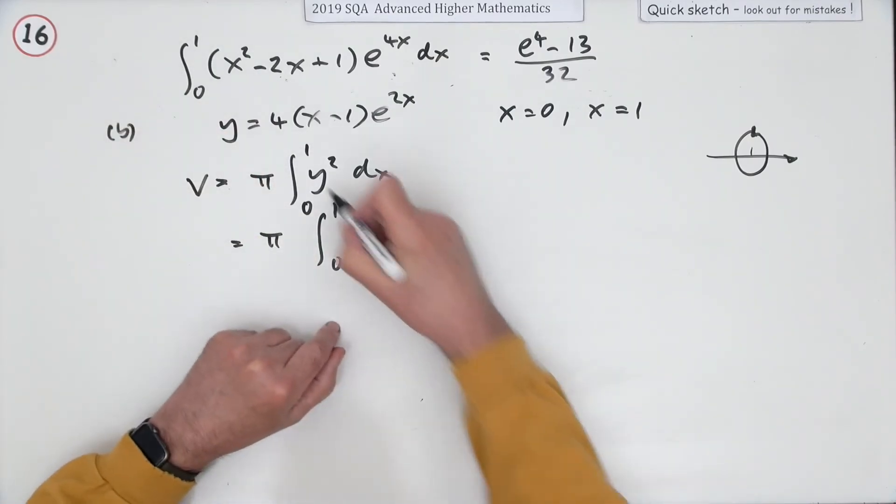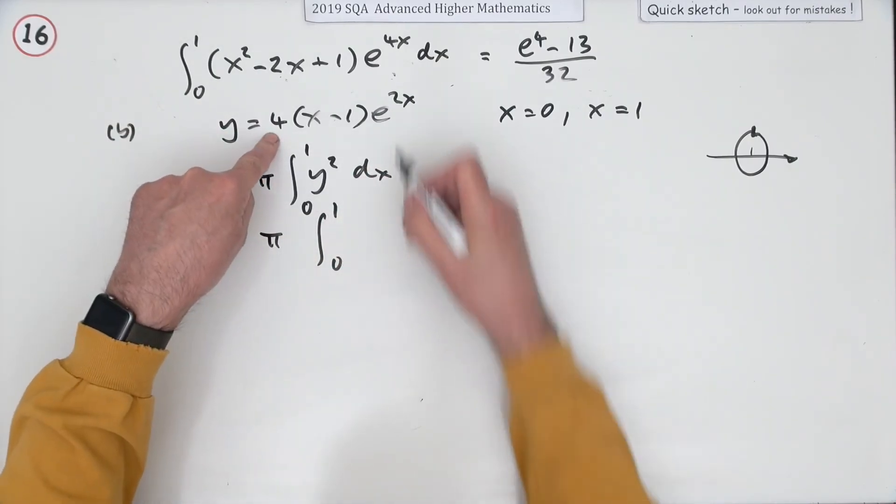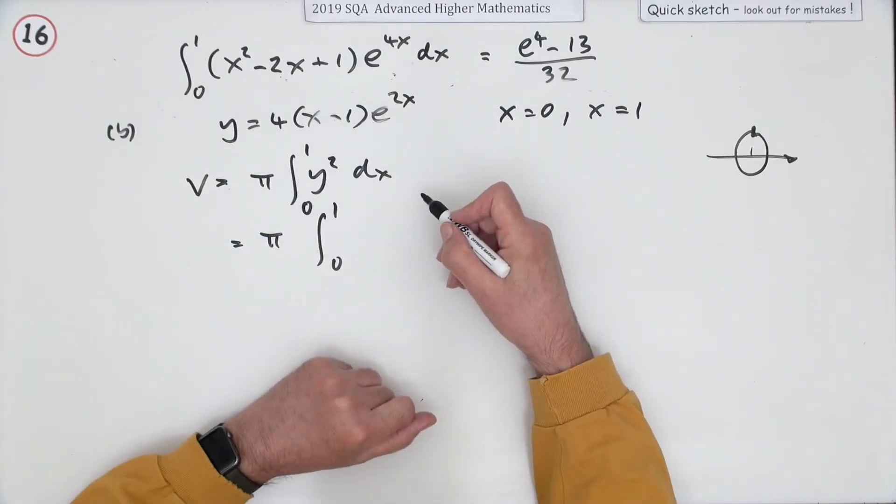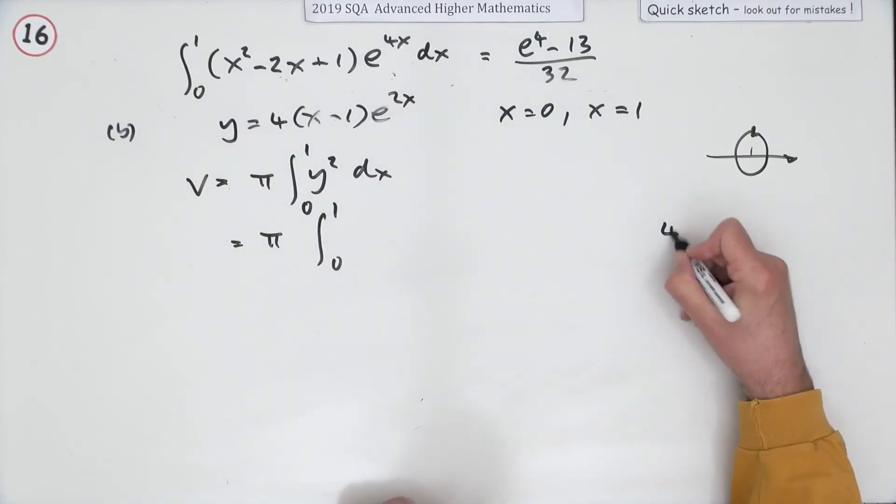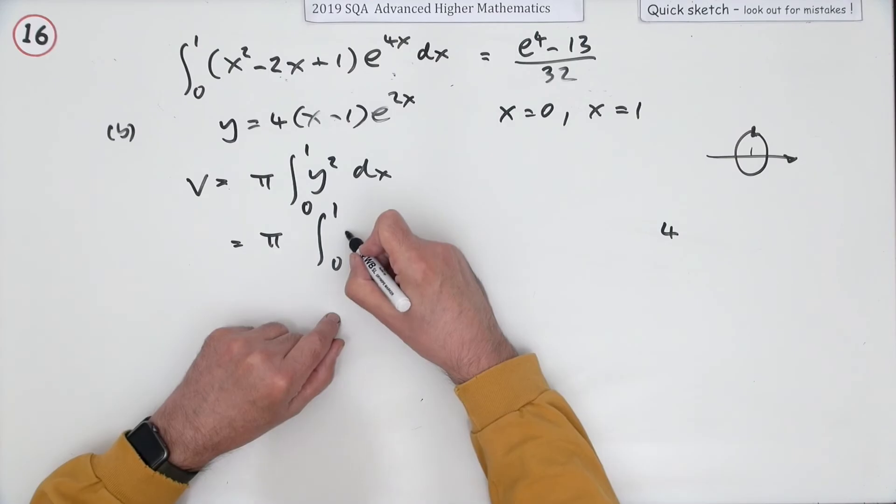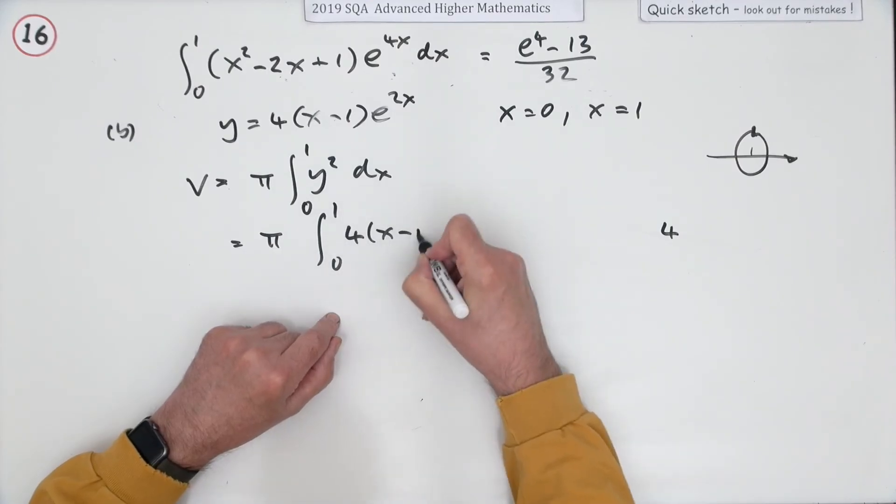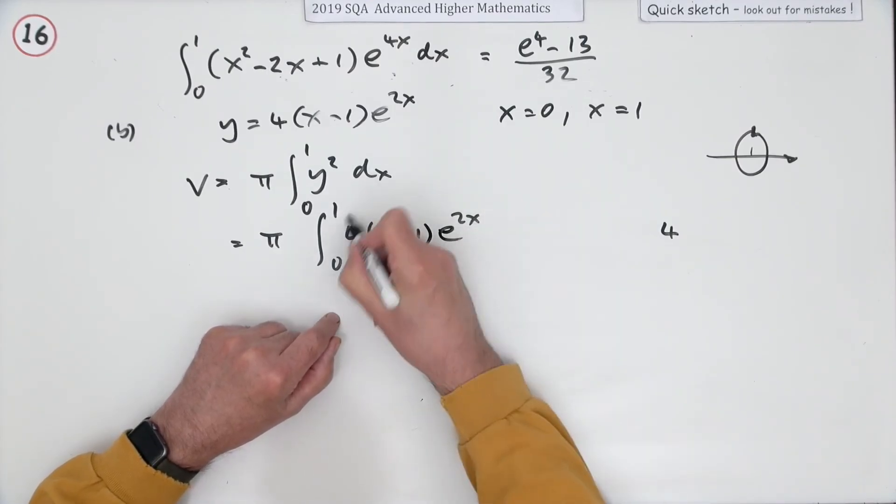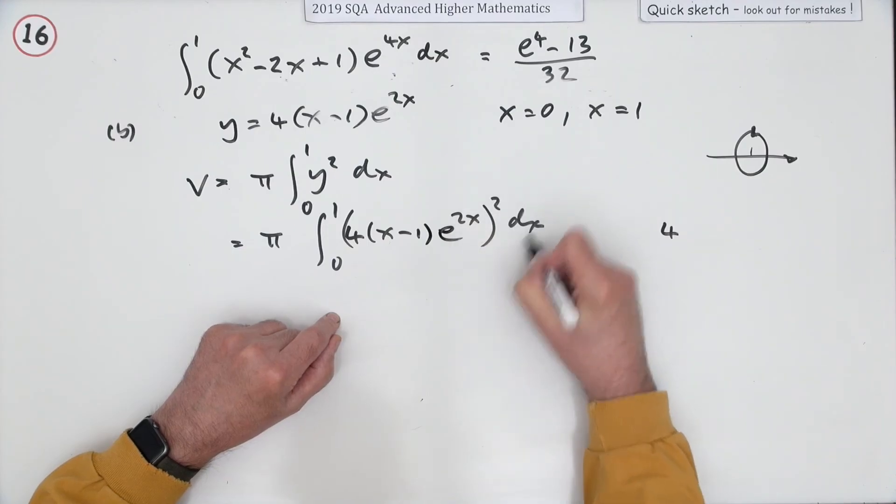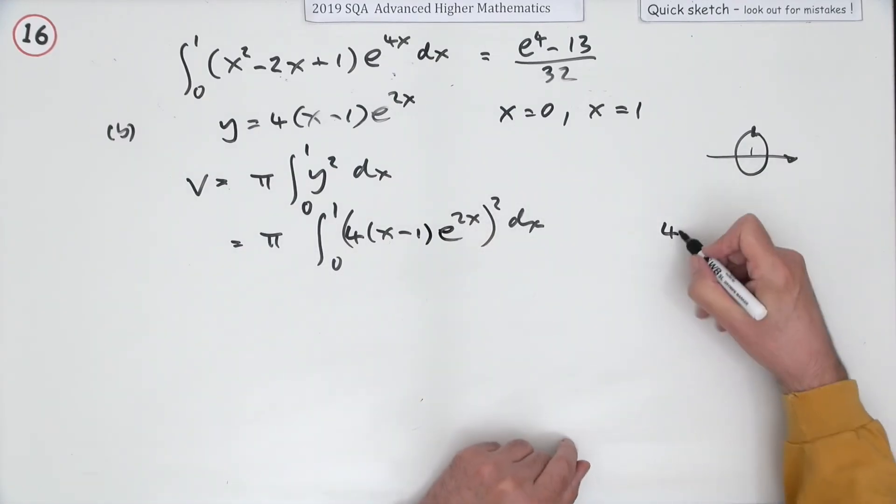So what is that then? So that's pi times integral from 0 to 1. You shouldn't be surprised it's going to be, now there's your e to the 4x. When you square this, so what's that part? I'll just do over here, no maybe I should put it in here first of all. 4x minus 1 e to the 2x squared dx.